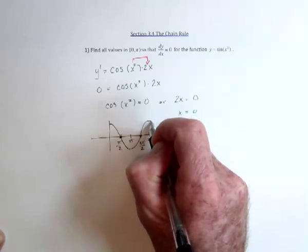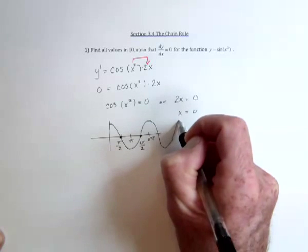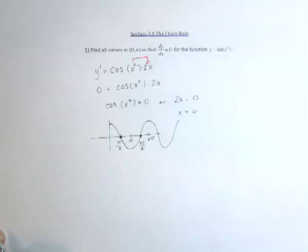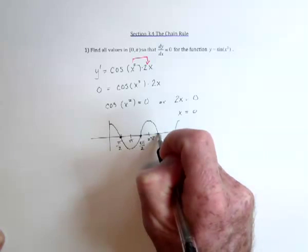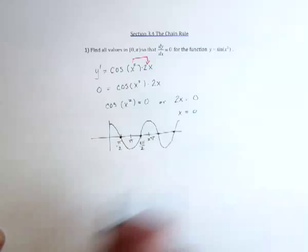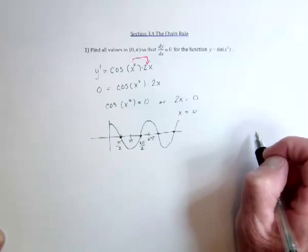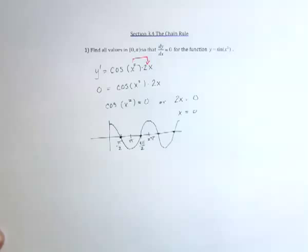Now, if we followed cosine out another cycle, we could get even more solutions. So we could get two more solutions by going out here. And then we could get two more, and two more, and two more.